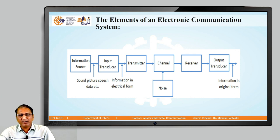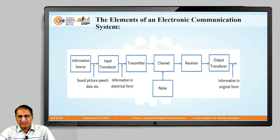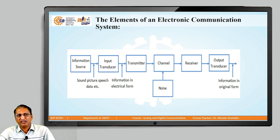Whenever we are communicating, there is a general block diagram called elements of an electronic communication system. The most important elements required for communication are: number one, information source. Whenever we are transferring information, it may be text, audio, or video. Information may be sound, picture, speech, or any data.